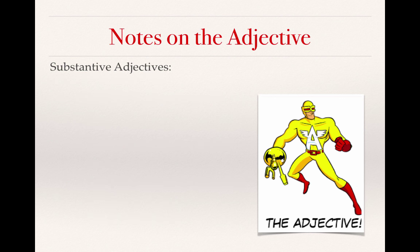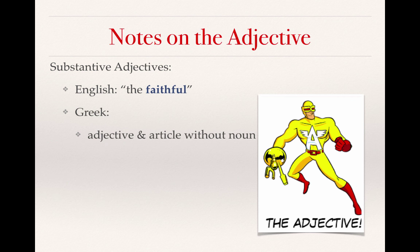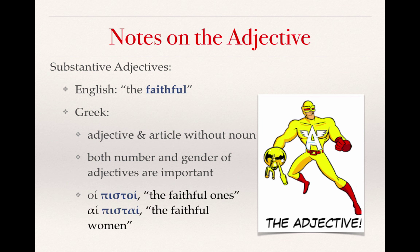Substantive adjectives take the substance of a noun — they stand in for the noun. In English, 'the faithful' uses 'faithful' as a noun. In Greek, we see an adjective with an article but without a noun. Both number and gender of the adjective matter for translation. For example, 'hoi pistoi' is masculine plural and is translated as 'the faithful ones' or 'the faithful men' — though Greek masculine plural can include both men and women. But 'hai pistai' is specifically feminine plural, meaning 'the faithful women.'